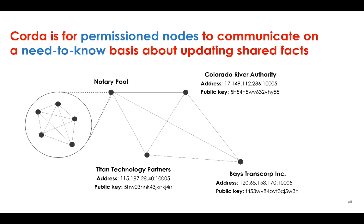So here on our slide, we have a network of three nodes and a notary pool. In a real Corda network, we'd have many more. Taking one of these nodes as an example, we can see the Titan Technology Partners node at the bottom. It has a legal name of Titan Technology Partners, it's contactable at the address 115.187.2840 on port 1005, and it has the root public key 5HW03, etc. All this information means that when Titan Technology Partners transacts, all their messages are encrypted and only sent to specific, legally identified counterparties.